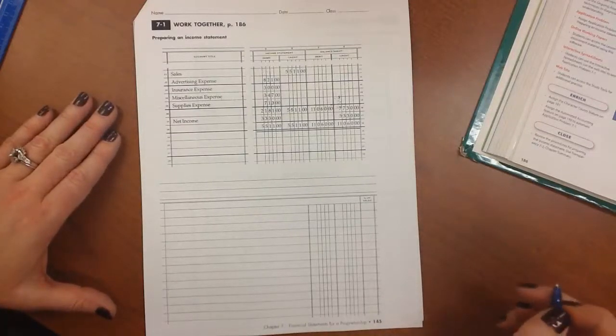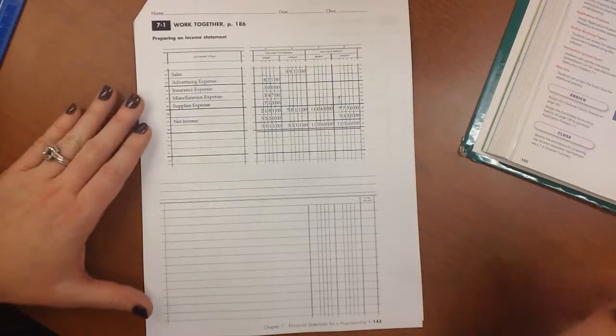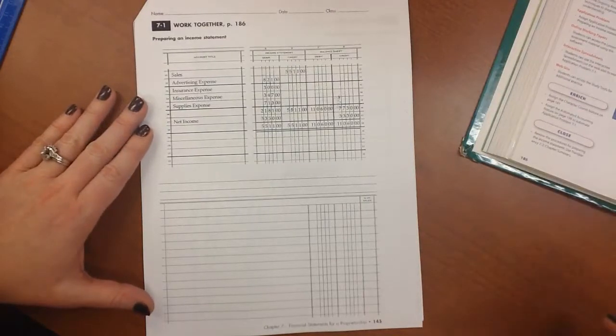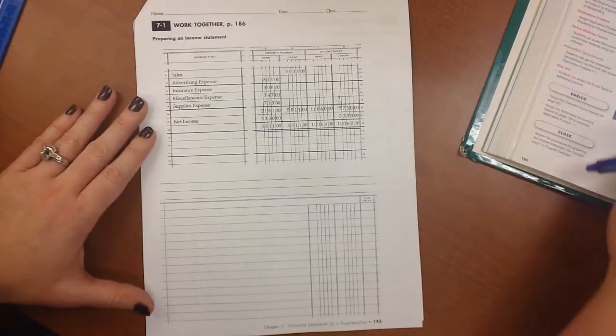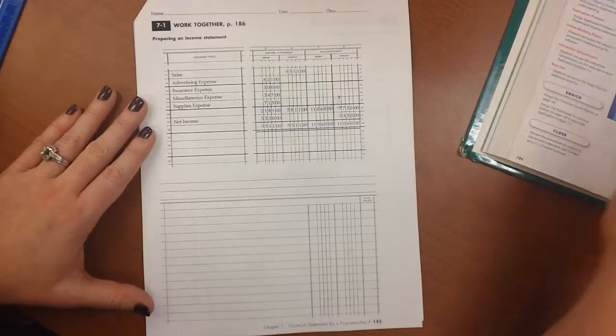This video is to help you complete the 7-1 work together. For this one, we are creating an income statement for the company of Darlene's Delivery Service for the month ended July 31st of the current year.